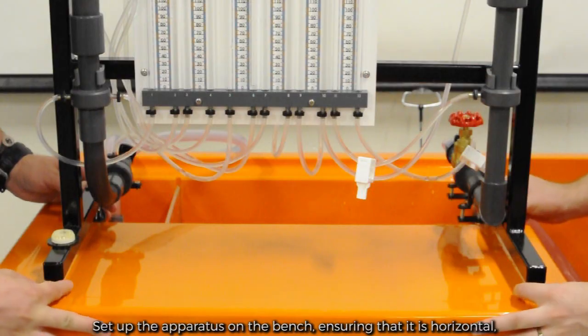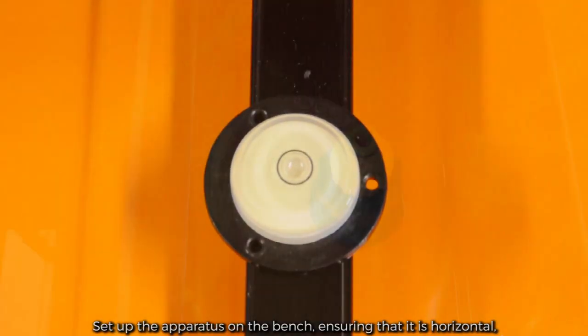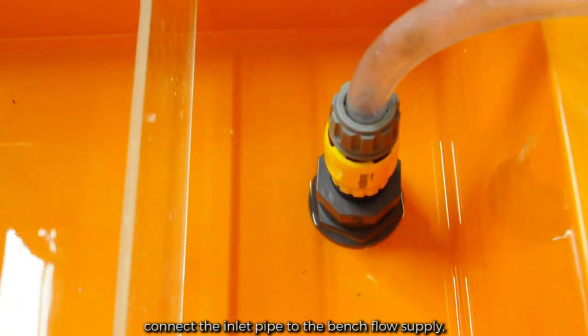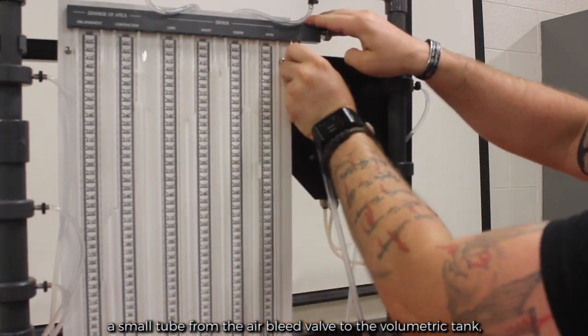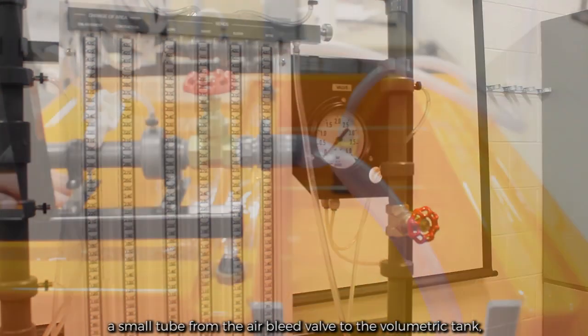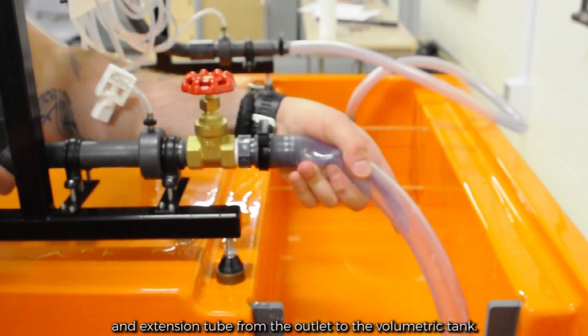Set up the apparatus on the bench, ensuring that it is horizontal. Connect the inlet pipe to the bench flow supply, a small tube from the air bleed valve to the volumetric tank, and an extension tube from the outlet to the volumetric tank.